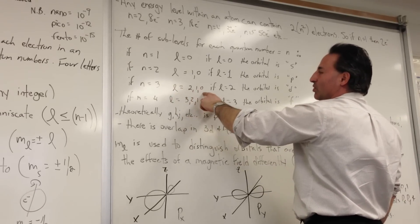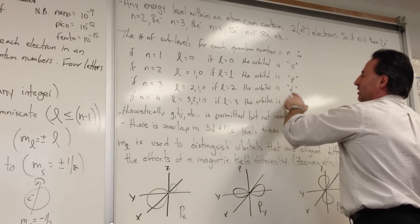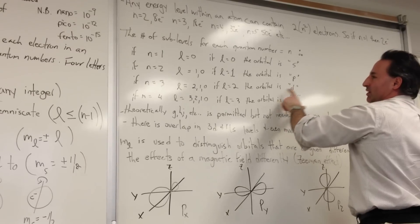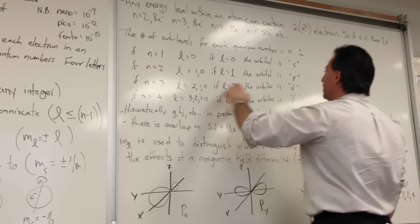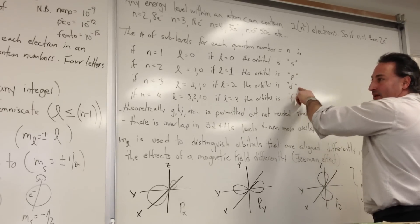If n equals 3, the value of L can be 2, 1, or 0. And when L equals 2, it's a d-orbital. And when the principal quantum number is 3, you can have s, p, and d-orbitals in that level.